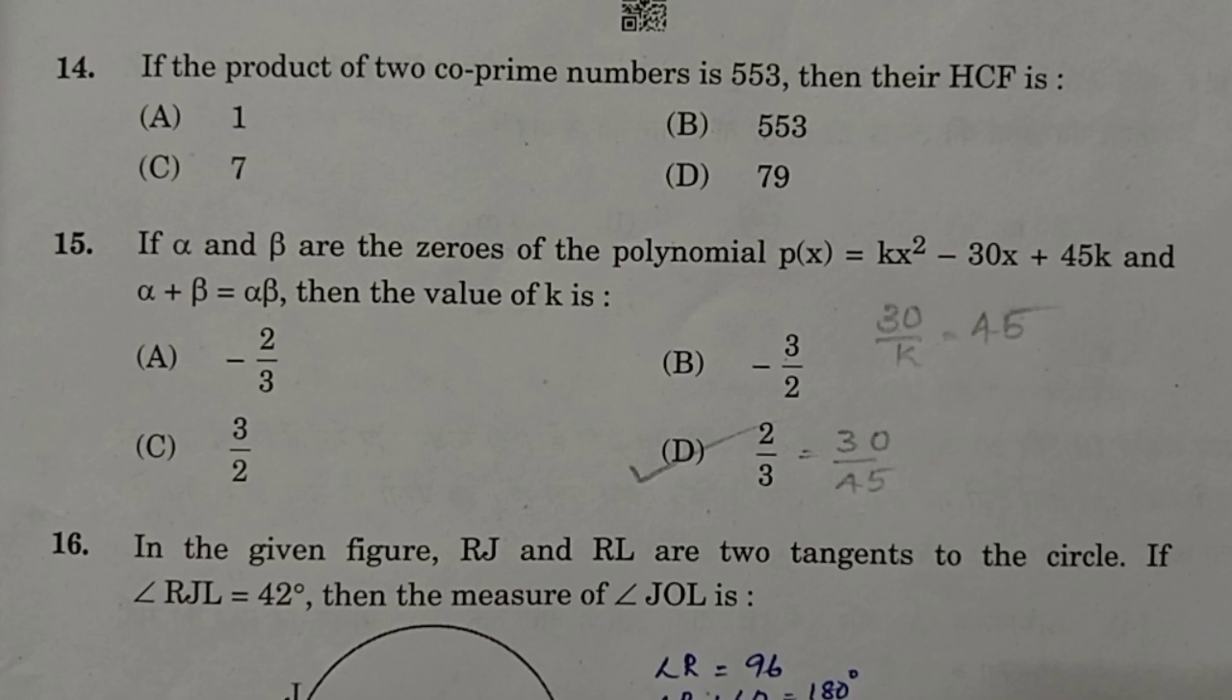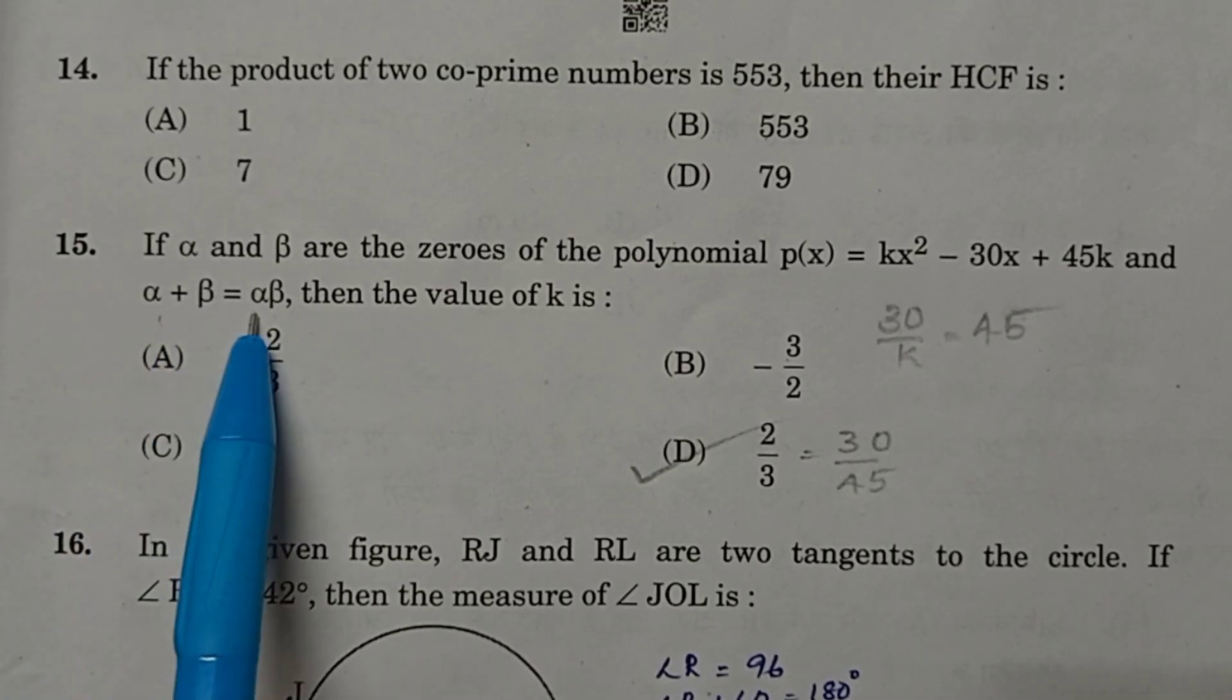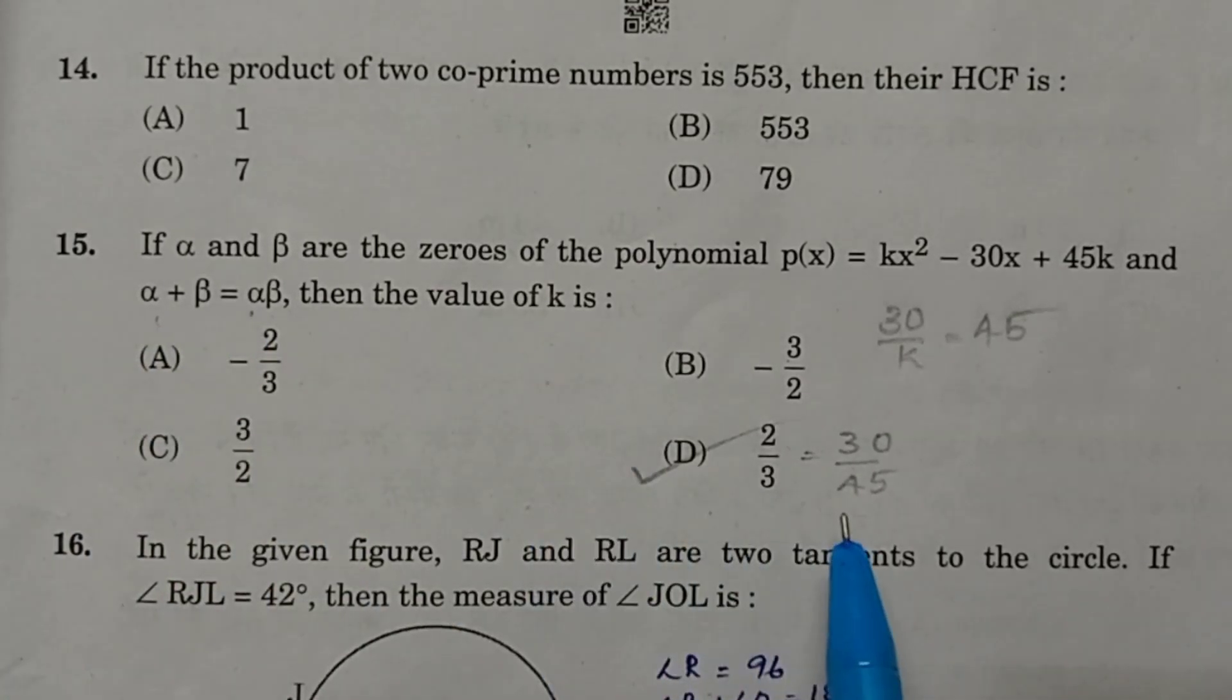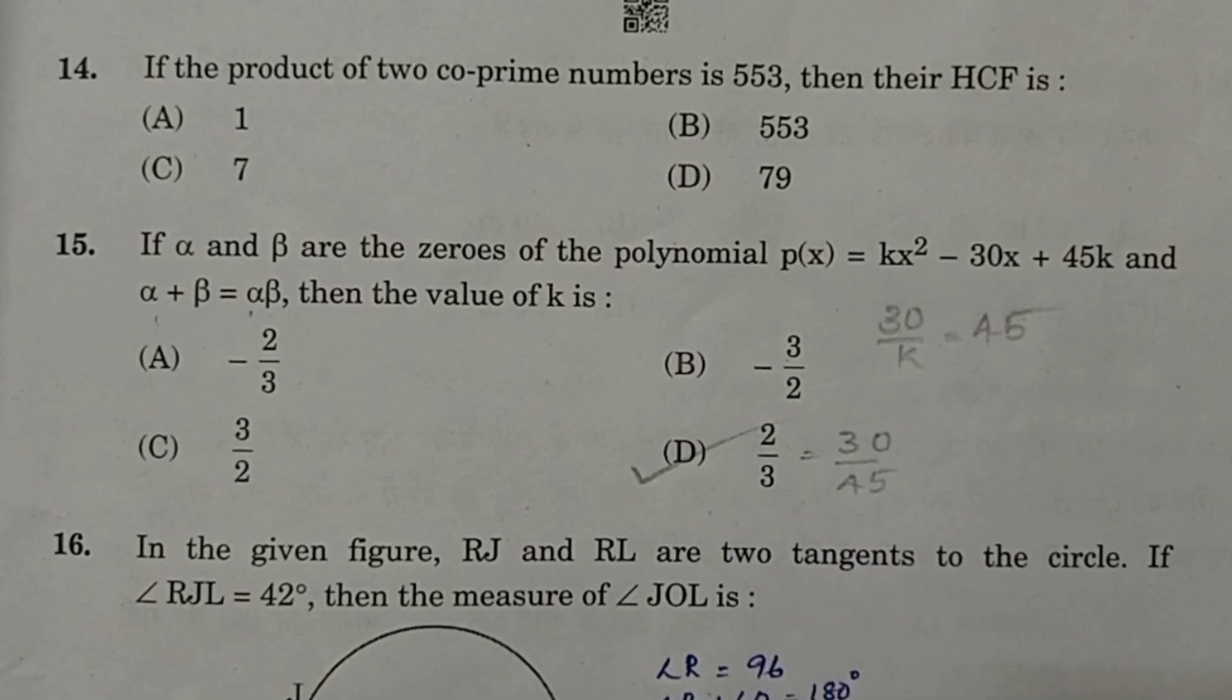Question 15. If alpha and beta are zeros of the polynomial P(x) equals Kx squared minus 30x plus 45K, and alpha plus beta equals alpha beta, then the value of K. In the question it is given that alpha plus beta and alpha beta are same. Sum of the roots is 30 by K, and the product of the roots is 45. Substituting and equating, we will get the value of K as 30 by 45, which is equal to 2 by 3.